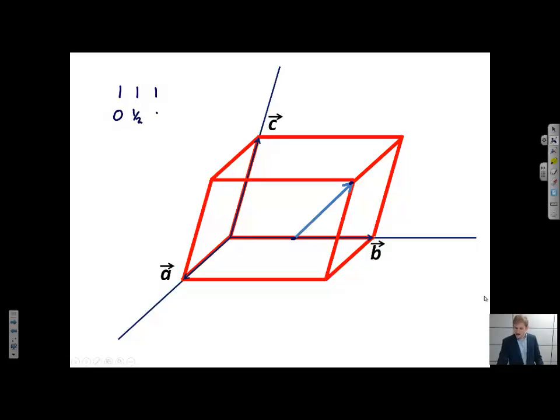The point of the tail is given by 0, 1/2, 0. If you don't know how to do this, go back and review the video on indexing of points. So if I subtract the tail from the head, I get 1, 1/2, 1.